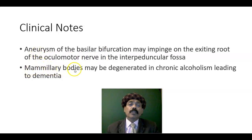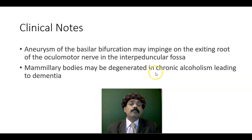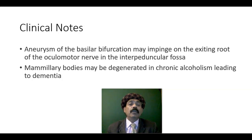The mammillary bodies are part of the hypothalamus. They are two in number and contain nuclei - collections of neurons - that are connected to the hippocampus. These may be degenerated in a person who is a chronic alcoholic, in a syndrome we call Korsakoff-Wernicke syndrome. People may not have memory and may fabricate stories - that is the Korsakoff-Wernicke syndrome.